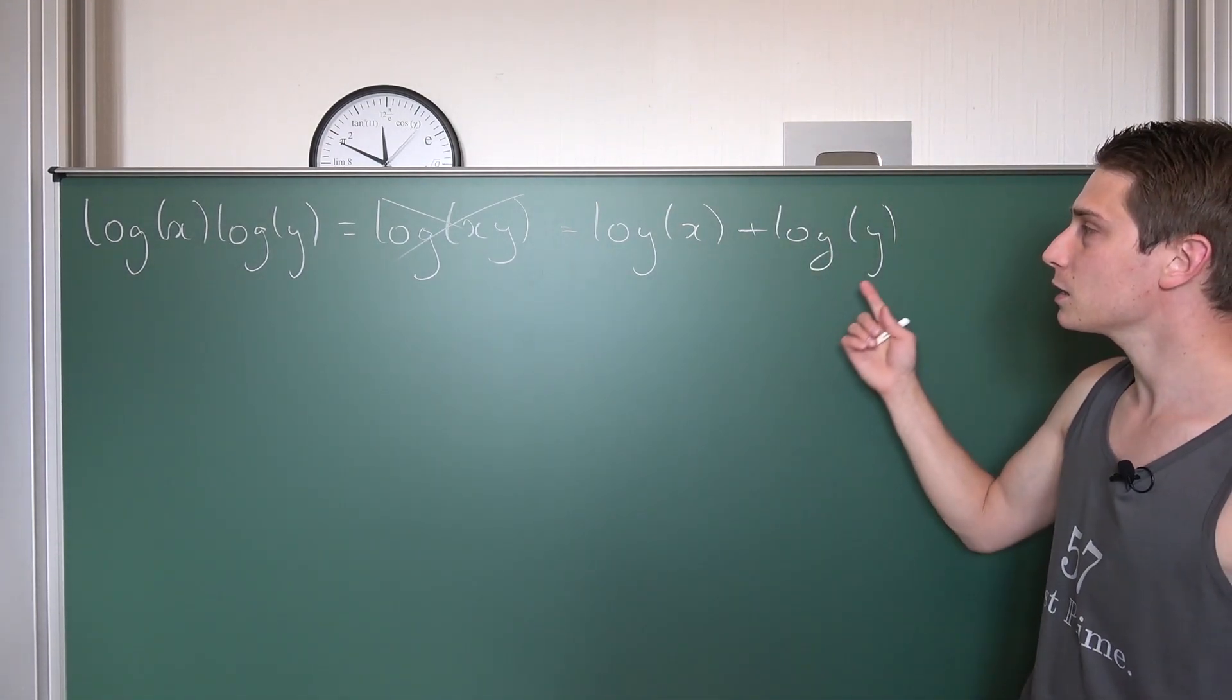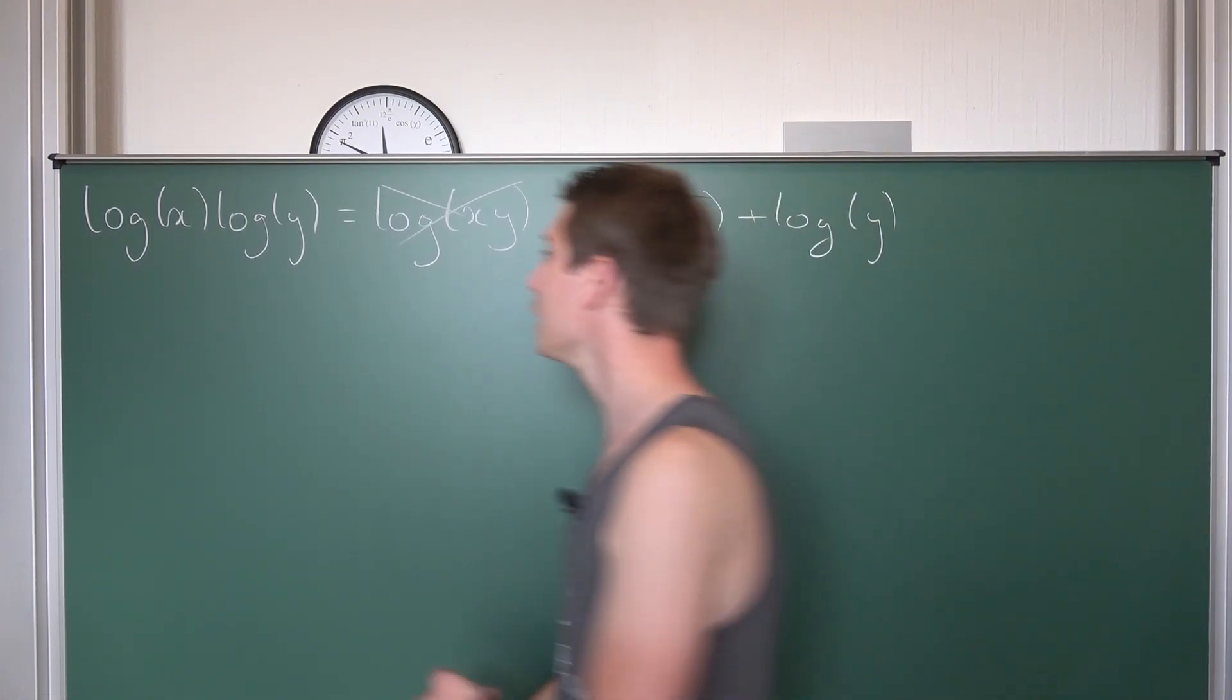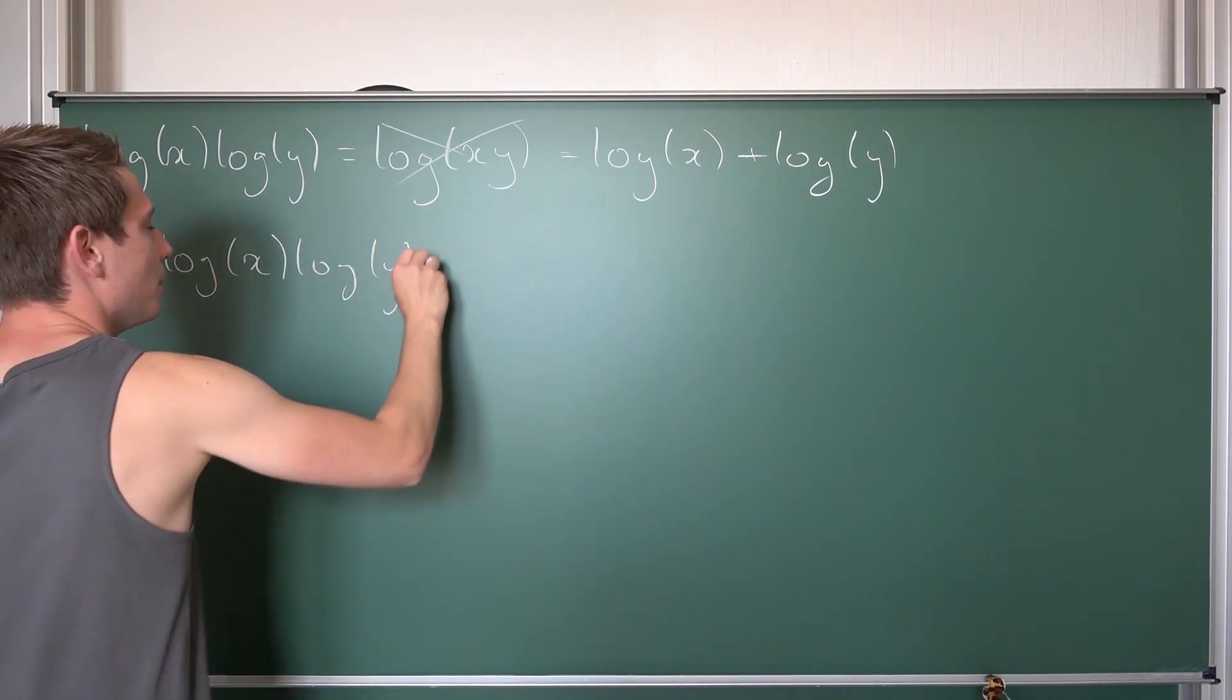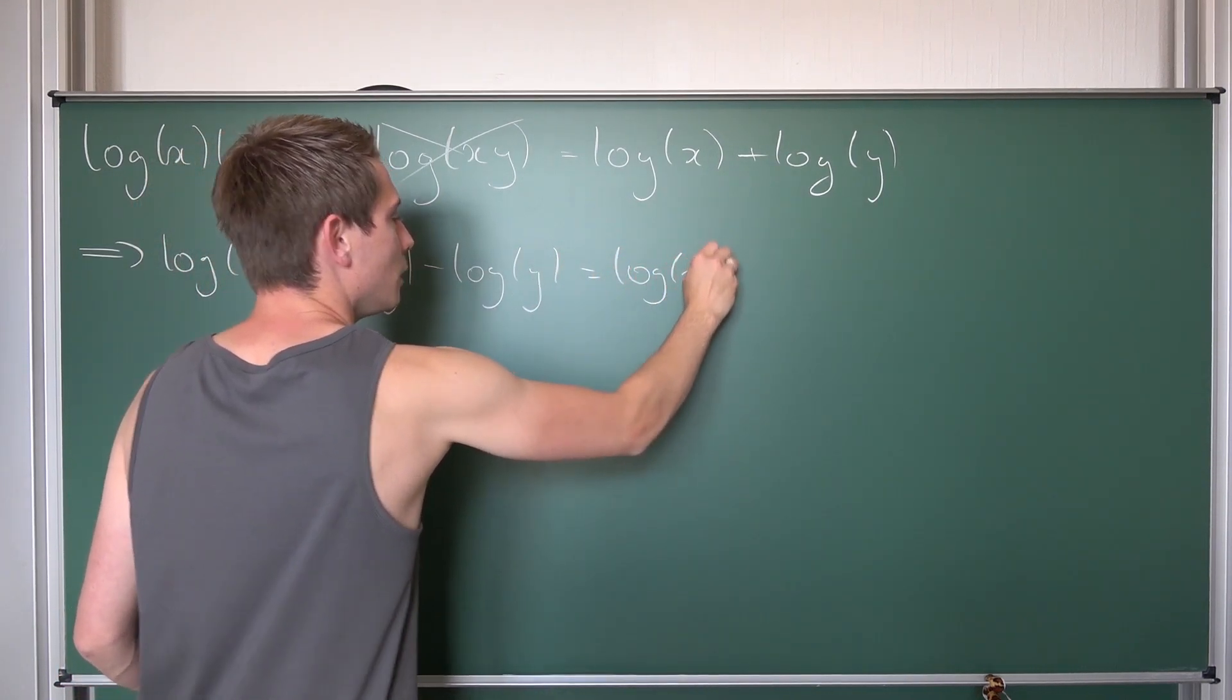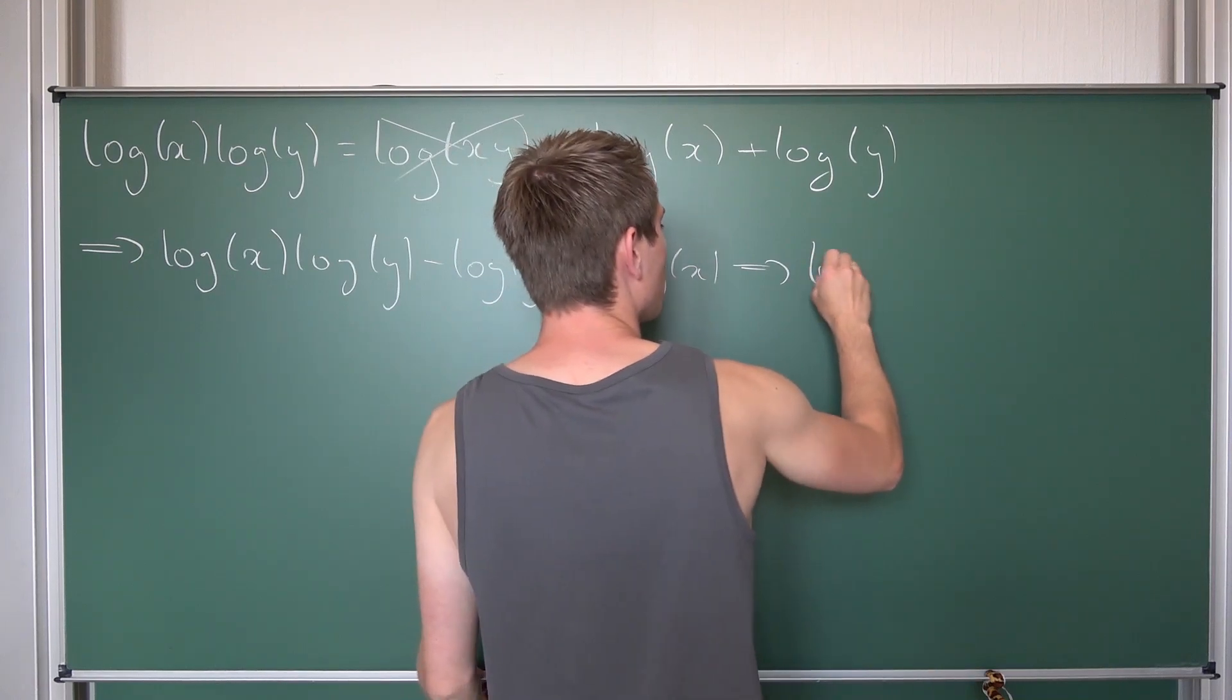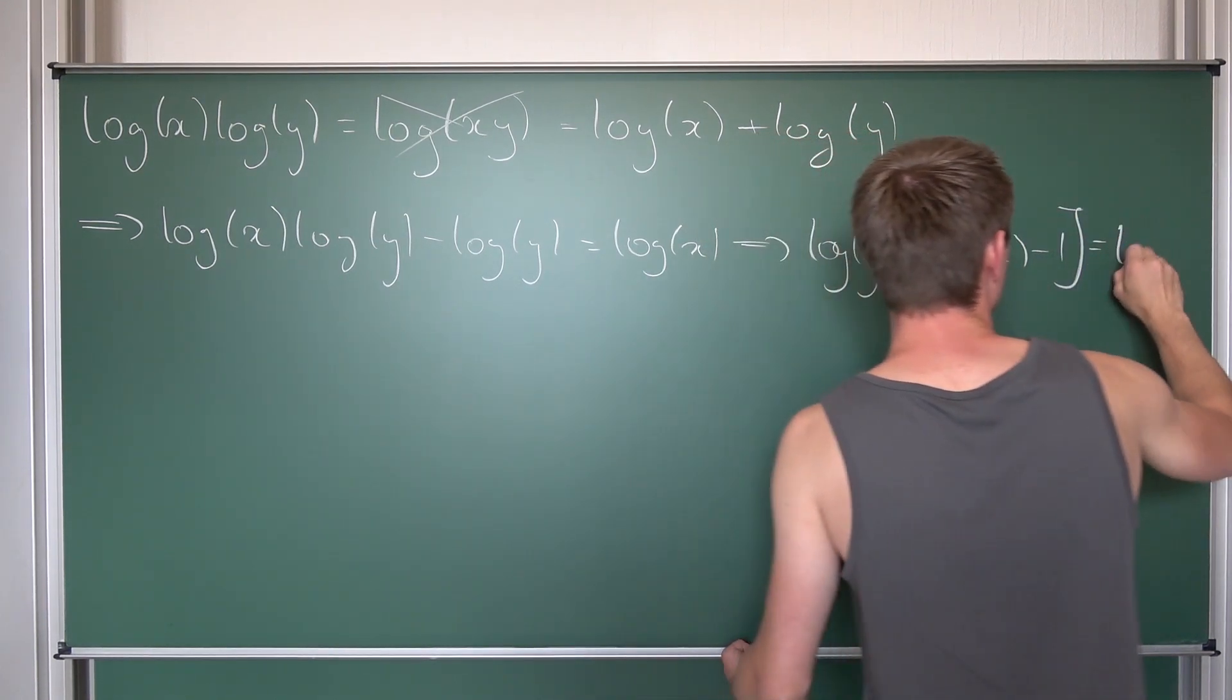But now we can actually solve for one variable here. Let's go for y because then we have y with respect to x as some kind of function. So we are going to subtract log of y on both sides, leaving us with log of x times log of y minus log of y being equal to log of x. And now you might notice that we have log of y as a common factor right here.